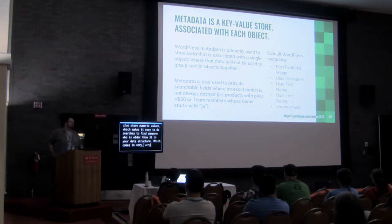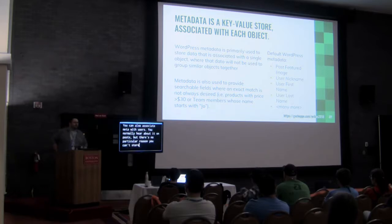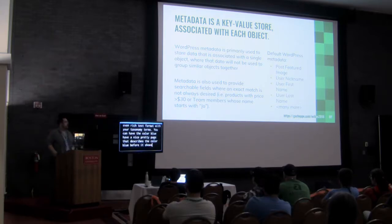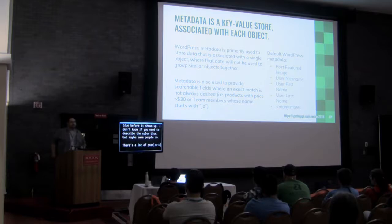Metadata is associated with posts, but you can also associate meta with terms and with users. You normally hear about post meta, but there's no particular reason you can't store a rich text area with your taxonomy terms — for example, having the color 'blue' have a nice descriptive page before it shows the archive. There are also a lot of meta fields that WordPress builds in automatically, and one I want to call attention to is Featured Image.